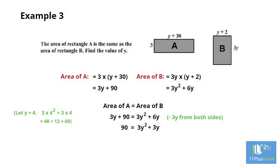Try y equals 5. 5 squared is 25. 25 times 3 equals 75. Then add 3 times 5 which is 15 to get an answer of 90. The final answer is y equals 5.